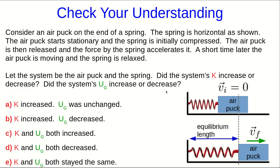Let's check your understanding. Consider an air puck on the end of a spring, and everything is horizontal. The air puck is starting stationary with the spring compressed, and it's then released. So, the puck is going to be pushed by the spring, and a little while later, it will be moving and the spring will momentarily be at its equilibrium length. So, in this process, did the system's kinetic energy increase or decrease? And did its gravitational potential energy increase or decrease?